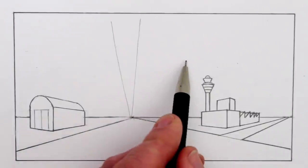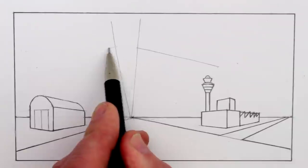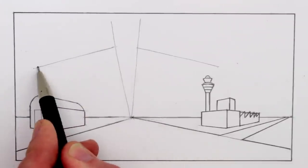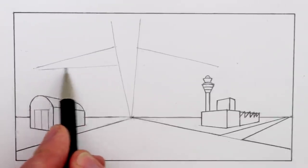Next add two more diagonal lines either side for the front of the wing. Next we can draw another horizontal line here for the back of the wing.